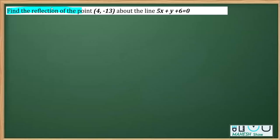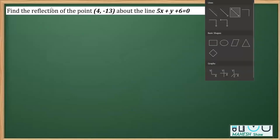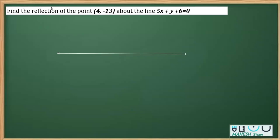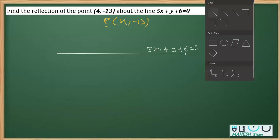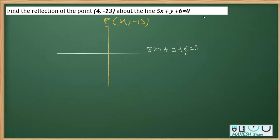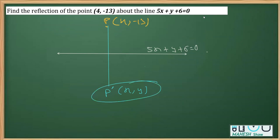The question is to find the reflection of this point about this line. I made this line and the equation is given as 5x plus y plus 6 equal to 0. I took a point named P whose coordinates are given as (4, -13), and we have to obtain its reflection. The reflection of point P — this line is acting as a mirror — I take this reflected point as P-dash with coordinates (x, y).